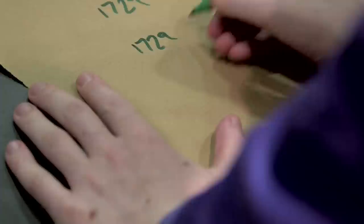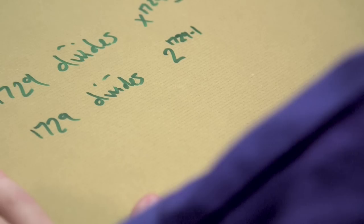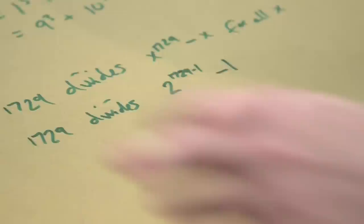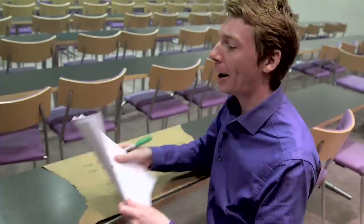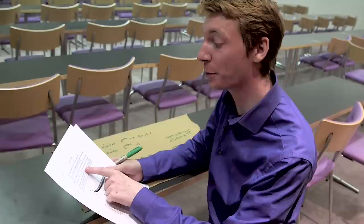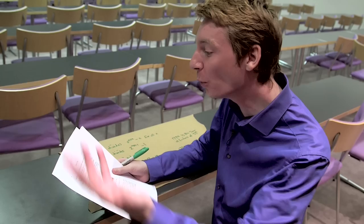1729 is also the sixth pseudo-prime number in base 2, which means 1729 divides 2 to the power 1729 minus 1. It's the thirteenth number that is one more than a cube. And the last example — quite a nice one — 1729 is the total number of ways to express 33 as the sum of six integers. All these different properties for 1729.